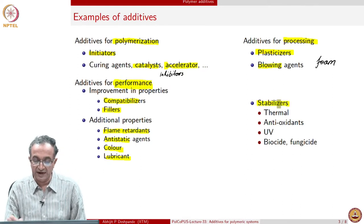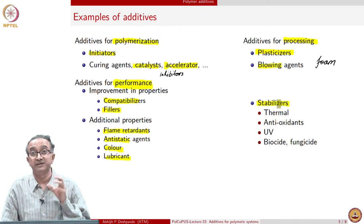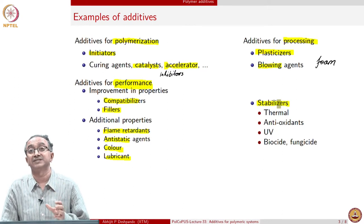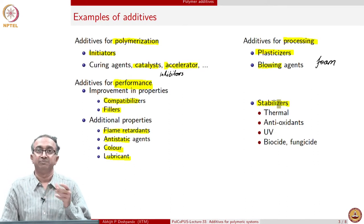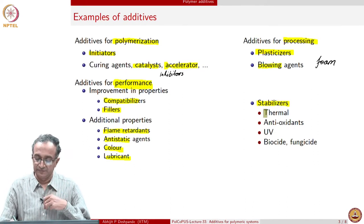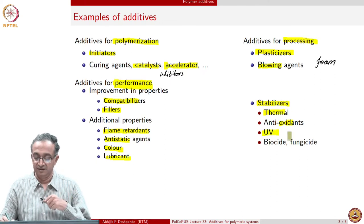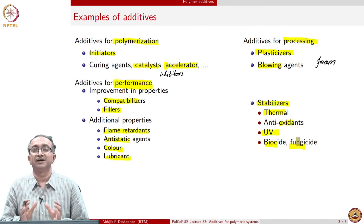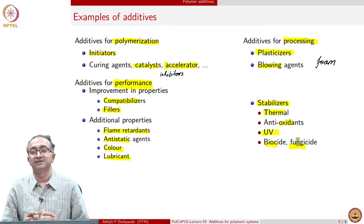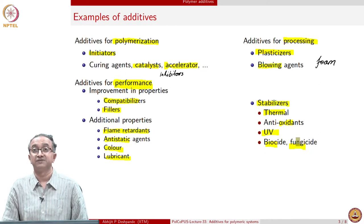We also add additives so that whatever performance we design the material for, it remains that way. The stability of the material to temperature, oxygen, radiation, and attack from fungus or bacteria — all of these are important in terms of stability. Many times we add additives to polymeric materials so that they achieve some of this stability.